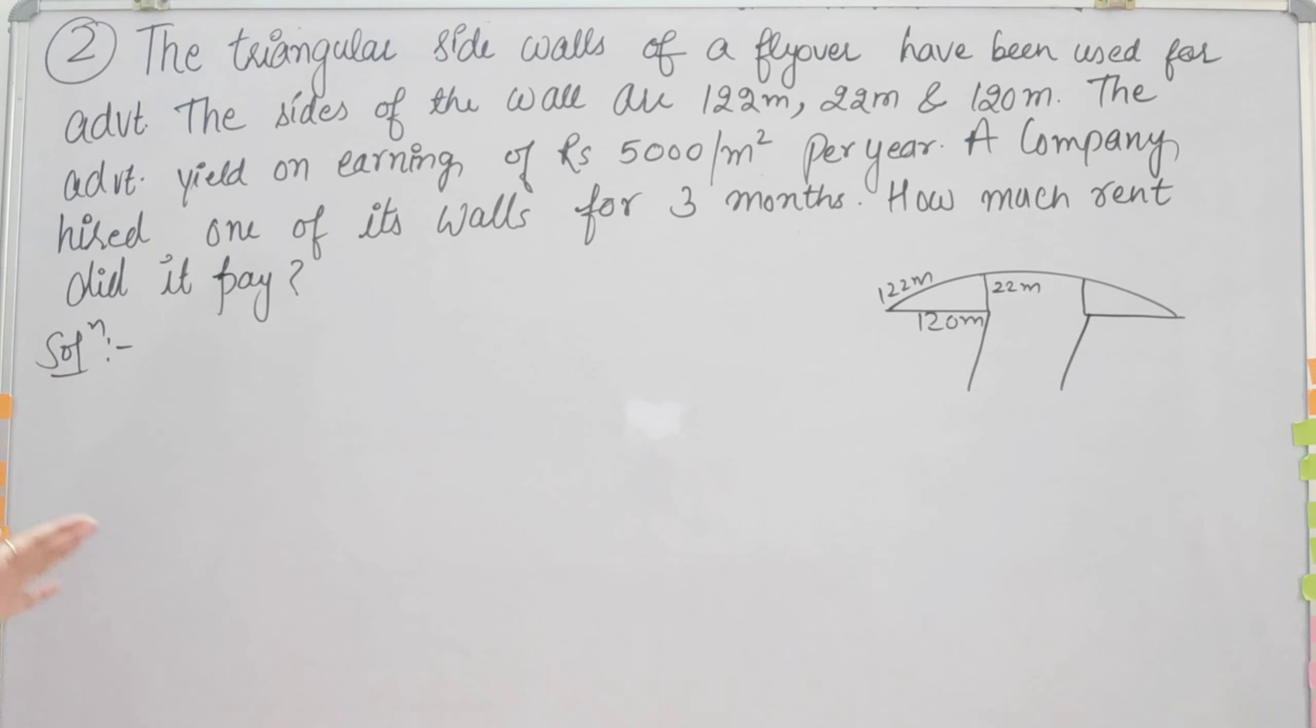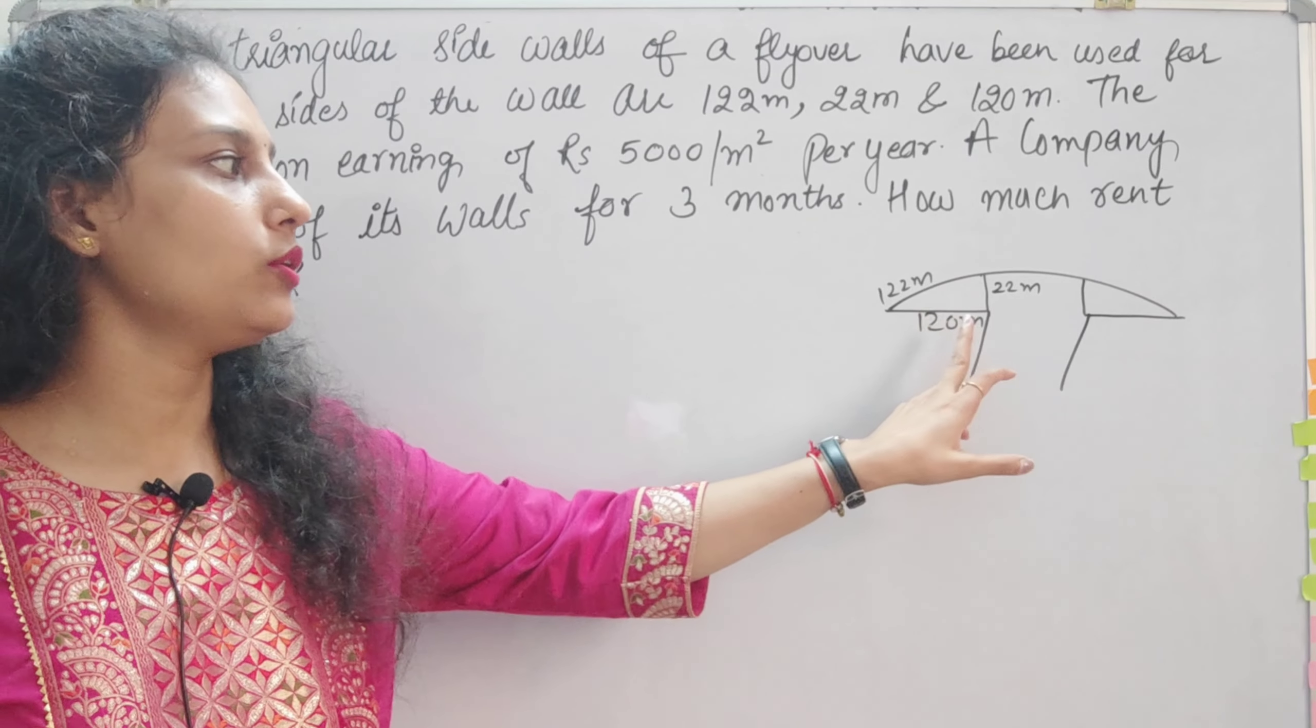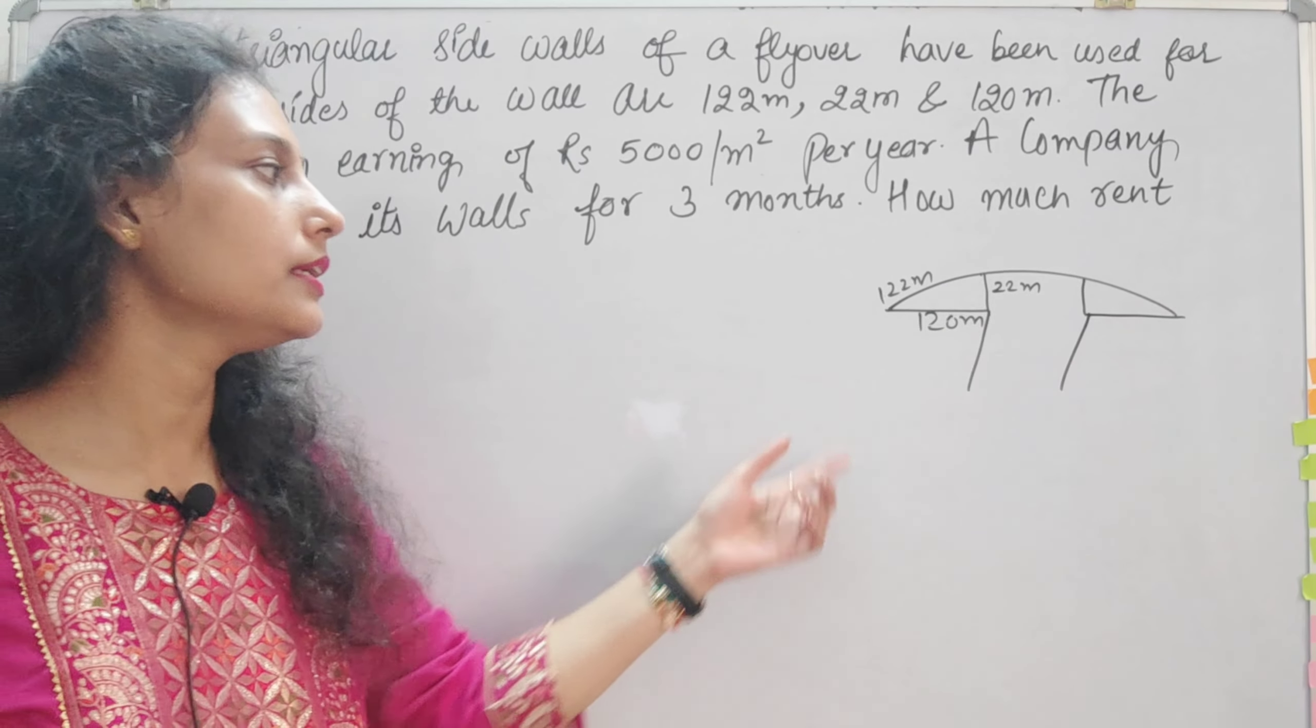See what is the question. The triangular sidewalls of a flyover have been used for advertisement. This is a flyover in which the triangular wall is used for advertisement, like the hoardings are placed in a triangle shape.